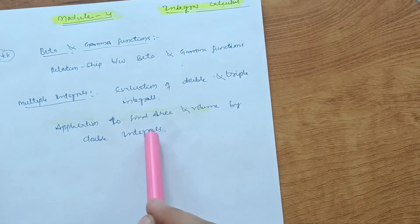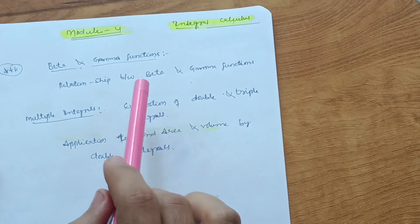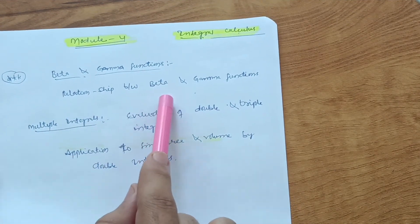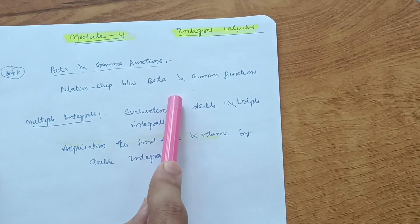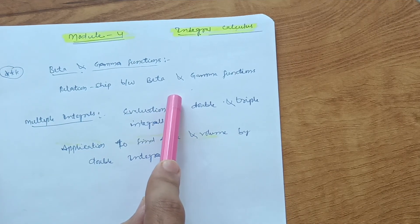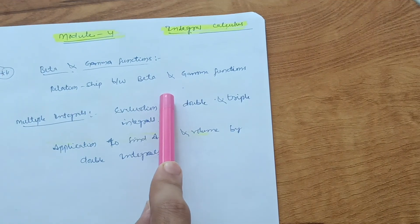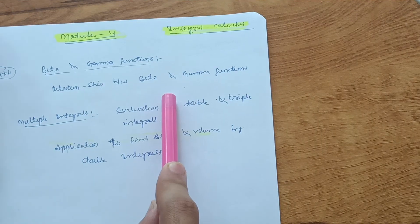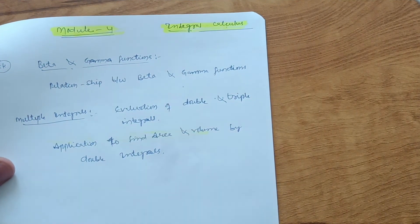Applications to find area and volume by double integrals — if you are comfortable, go through it; otherwise just focus on the relationship between beta and gamma functions. That is the whole passing capsule for Mathematics 1 for the EEE department. Hope this video is beneficial for you. Make sure you share it with your batchmates who are struggling with this subject. Thanks for watching.